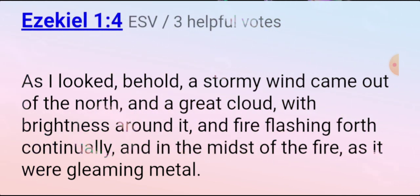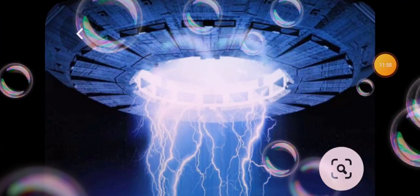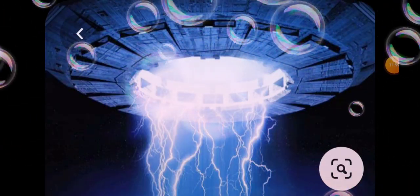Look at Ezekiel 1:4: As I looked, behold a stormy wind came out of the north and a great cloud with brightness around it and fire flashing forth continually, and in the midst of the fire, as it were, a gleaming metal. Come on now, this is elementary. You know what this is. It's the chariots.